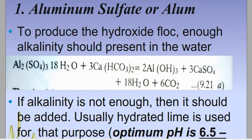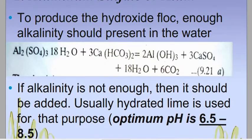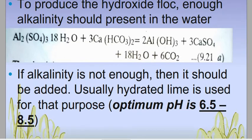If alkalinity is not enough, it should be added. Usually hydrated lime is used for this purpose — we add hydrated lime to make the water alkaline so that the optimum pH reaches between 6.5 to 8.5, which is the effective pH range in which alum works.